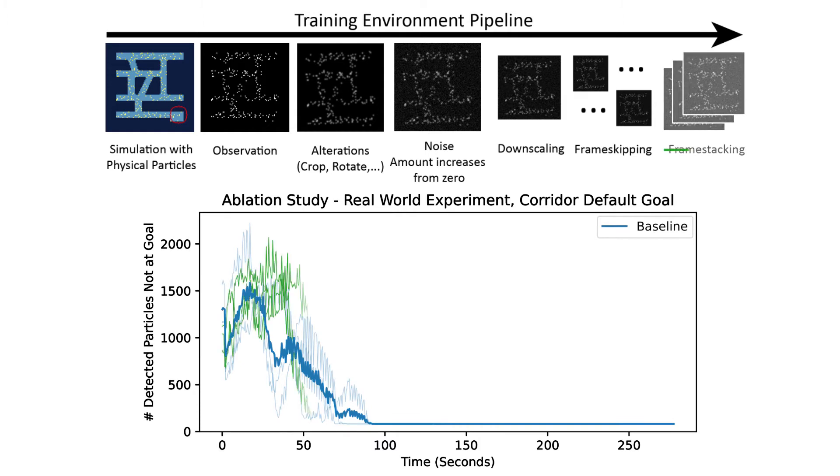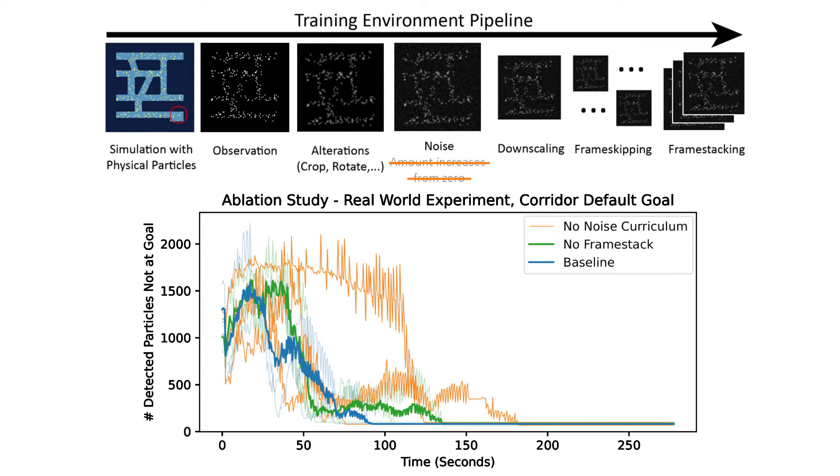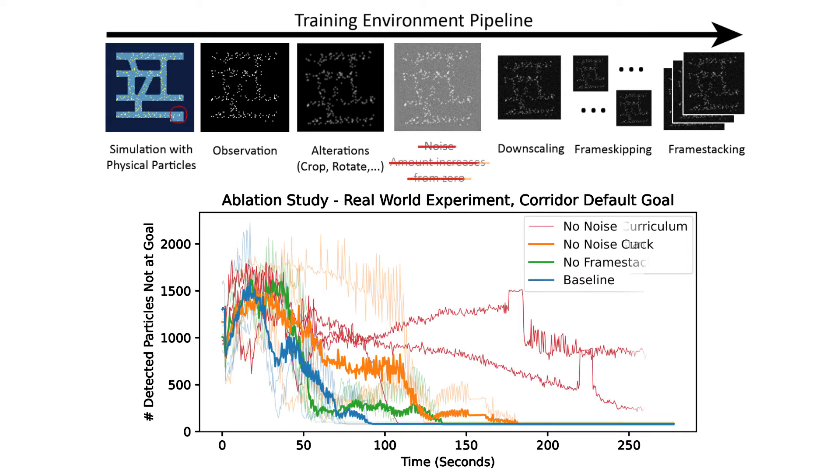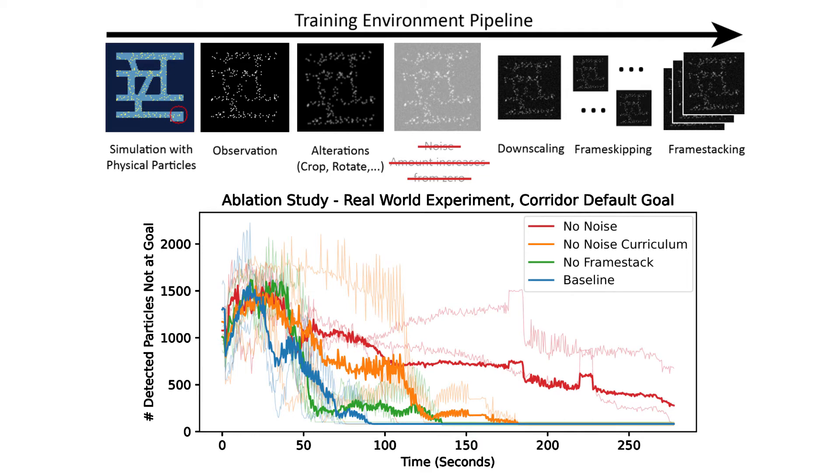If we remove frame stacking, our agent has less information about particle movement and performs worse. Without a noise curriculum, gathering takes, on average, 90 seconds longer. With agents trained without noise, the particles were often still not gathered after four minutes.